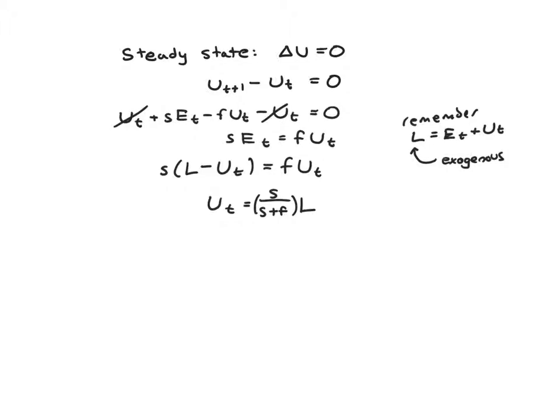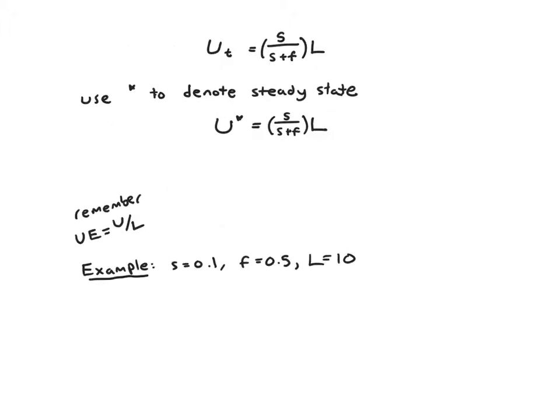If you just plug in the exogenous variables s, f, and L, you'll calculate u_t. Although really, this is the steady state level of u, and because this is the steady state level of u, it's not really a general equation for u_t. It's not good to write it like this because we might trick ourselves into thinking I could calculate u_t for any t with this equation, and that's not really right. So instead of writing u_t, we'll stop using the t subscripts because this isn't really for a time period, it's for the steady state, and we'll put an asterisk, the little star there. The asterisk denotes a steady state.